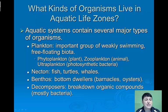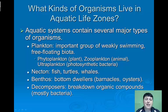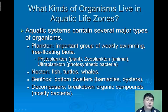Aquatic systems will contain several major types of organisms. First, we'll have plankton or planktonic organisms — weakly swimming or free-floating animals. They include phytoplankton, which are plant-like plankton; zooplankton, which are animal-like plankton; and ultraplankton, which are photosynthetic bacteria.